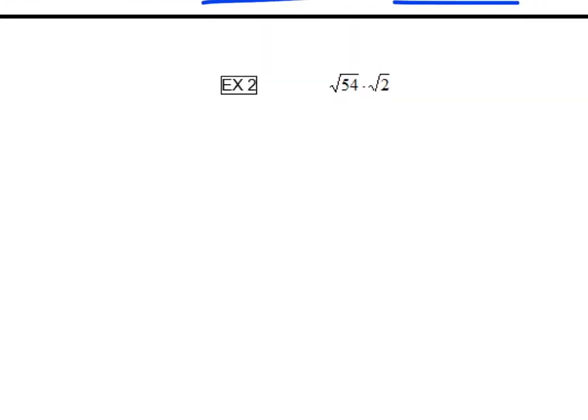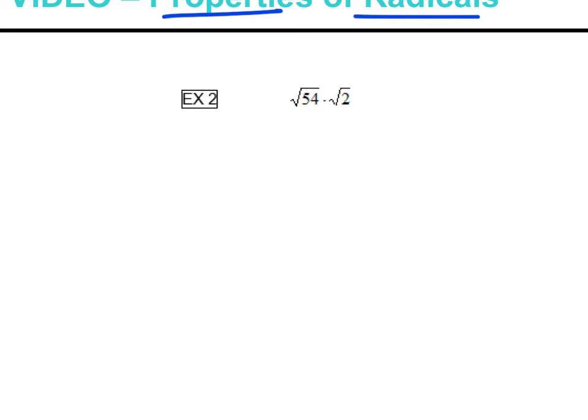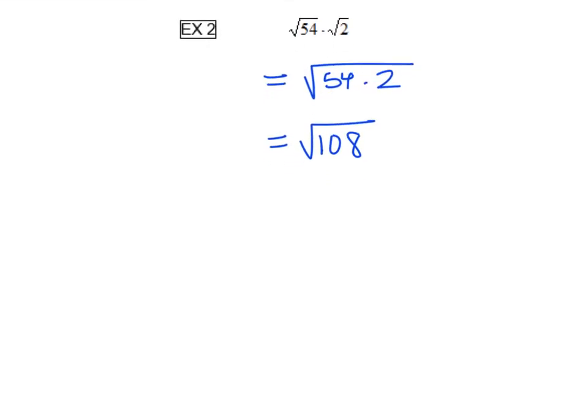Let's take a look at our second example. Here you can see that we are multiplying two square root numbers. There's a property that tells us you can multiply them both underneath the same radical. And then you're looking at the square root of 108. Anytime that you get a square root answer, you're going to try to reduce it like we did in the last example.